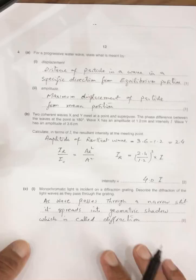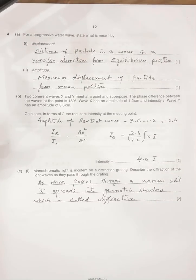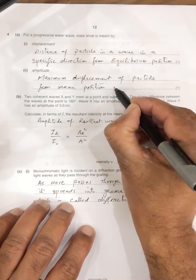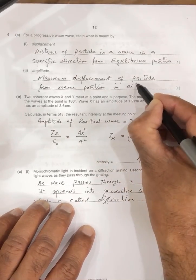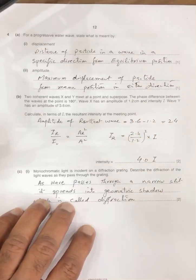Now, the next question is question number 4. For the progressive wave state, what is meant by displacement? Displacement of the particle in the wave is in the specified direction from the equilibrium position. So distance of the particle in the wave in the specific direction from the equilibrium position is called displacement. Amplitude, maximum displacement of the particle from the mean position in either direction. Because it has no fixed direction, we can take up, we can take down.